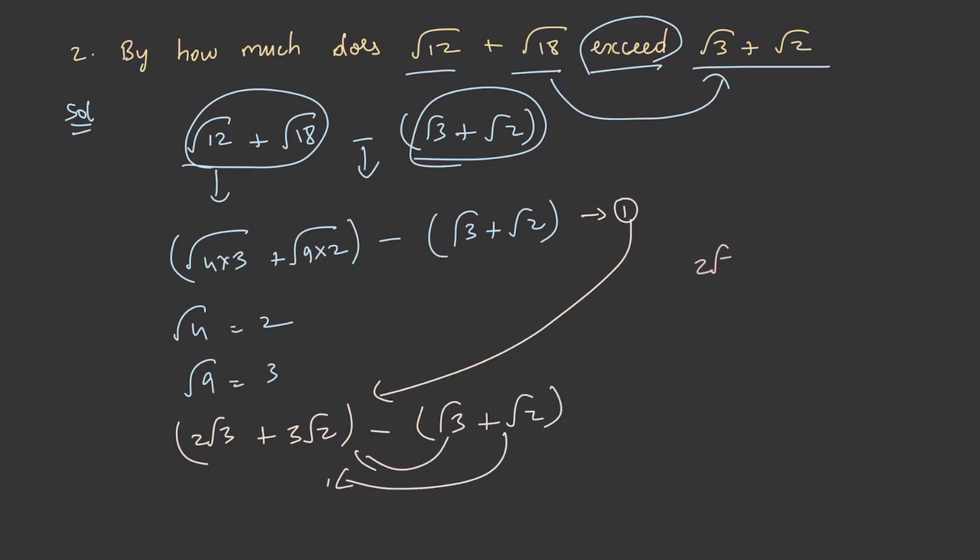We get 2√3 - √3 + 3√2 - √2, and this on simplification gives √3 + 2√2. This is the final answer. That is the end of type 2. We shall deal with another category in the next lecture.